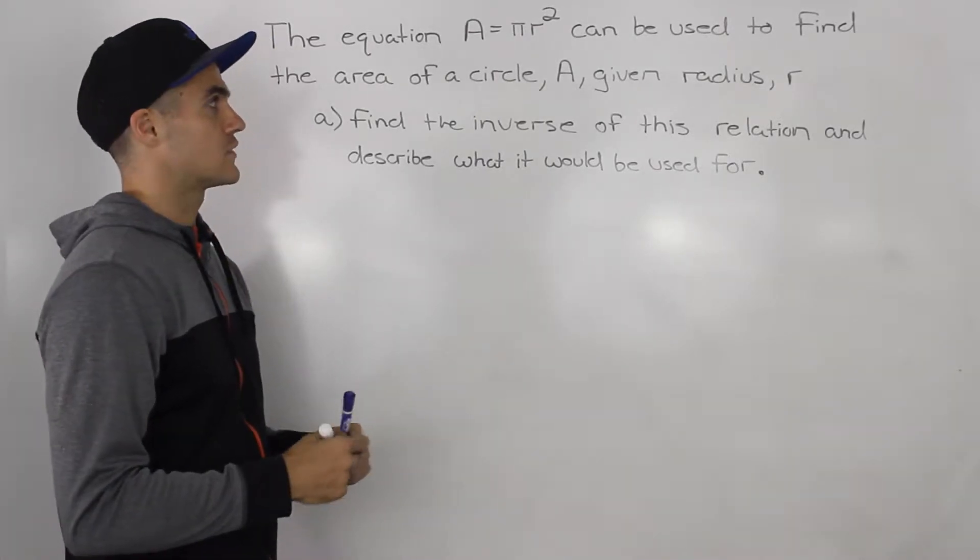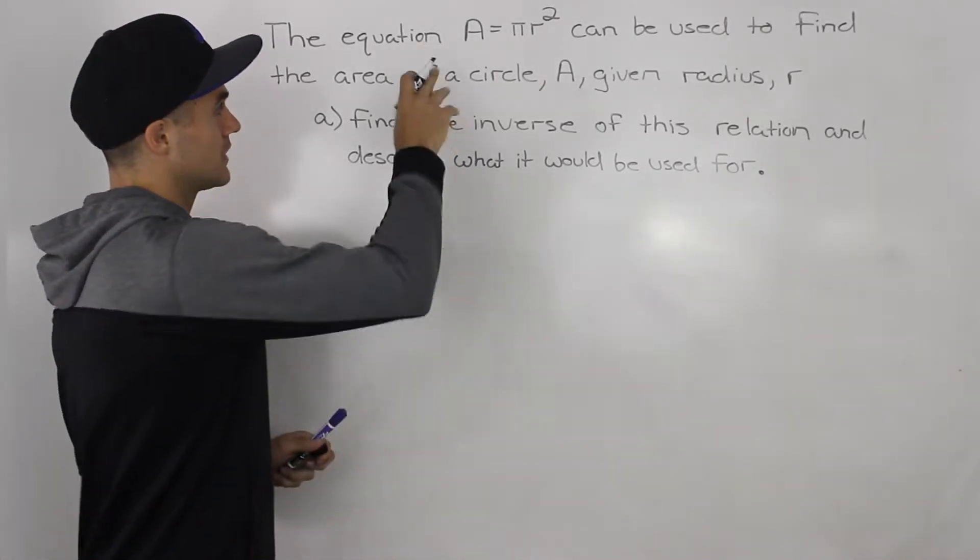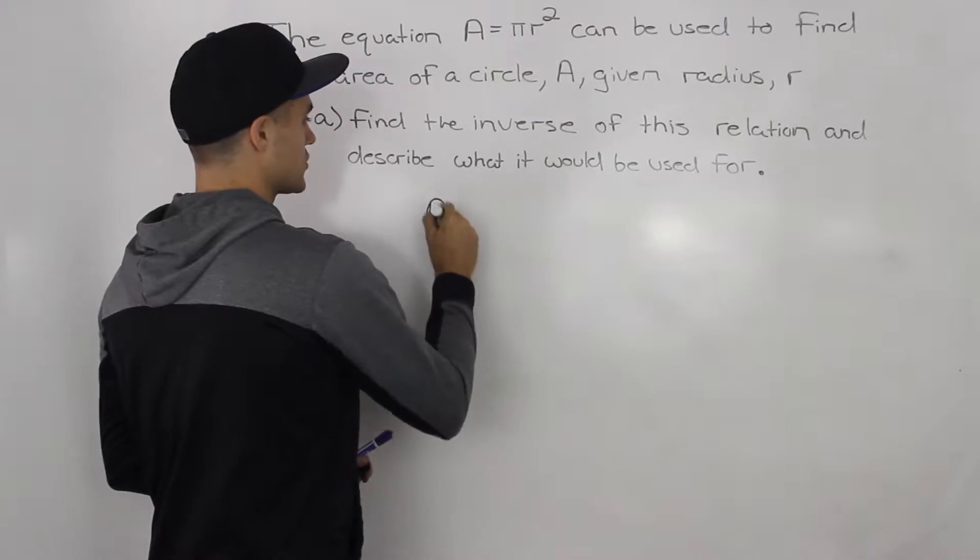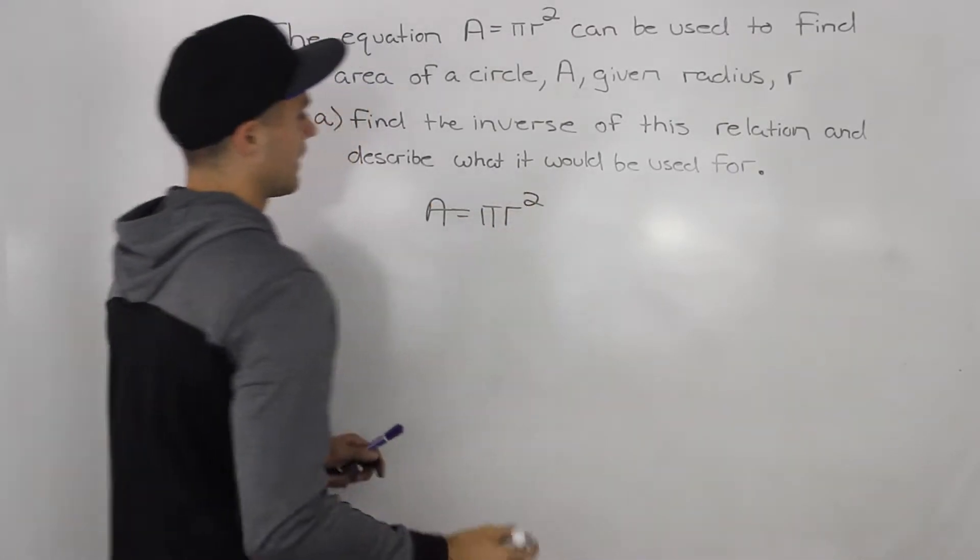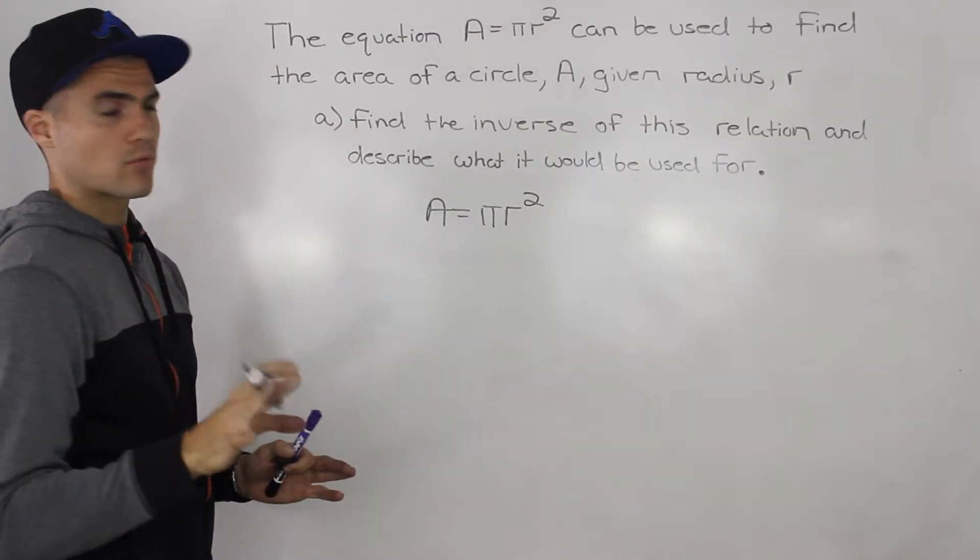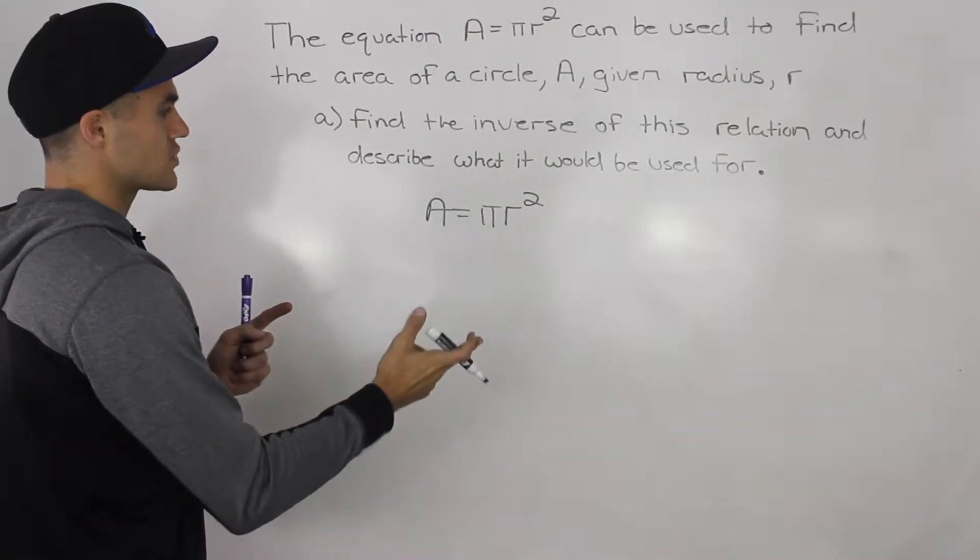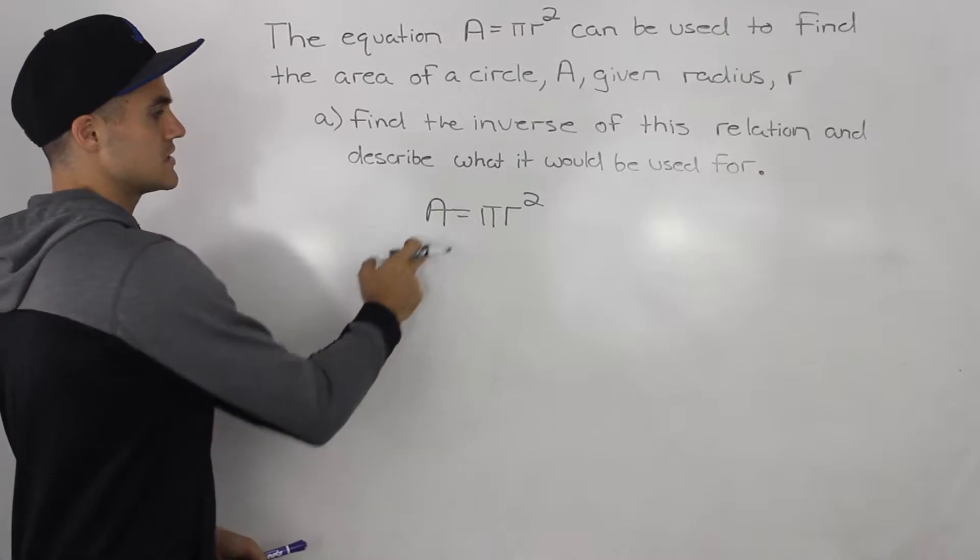So part a, we have to find the inverse. So what we would do is let's write out the original equation A = πr². And what we're usually doing when we're finding the inverse is we are switching up the variables, the dependent and the independent variable,